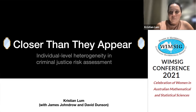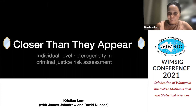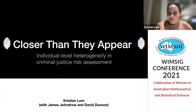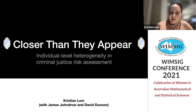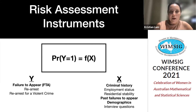Today I'd like to talk about a project I've been working on — something like six years in the making, even though this particular piece has probably taken over the last year. What I'm going to look at is this idea of individual-level heterogeneity in criminal justice risk assessments. This is work I did with James Jandro and David Dunson.